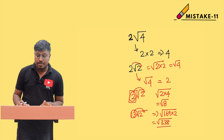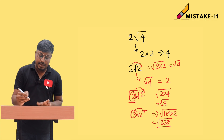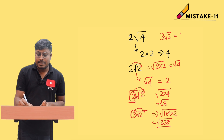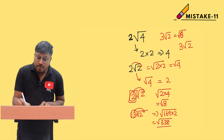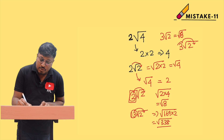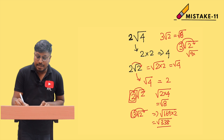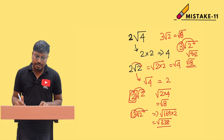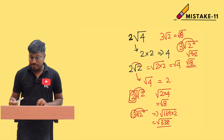So this is the right way to handle these kinds of numbers. Don't make the mistake of writing 3√2 as √6 — that is wrong. When you bring 3 inside the square root, you must square it first: 3 squared is 9, so 3√2 = √18. That is the correct answer.